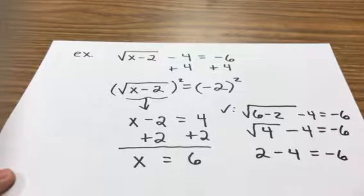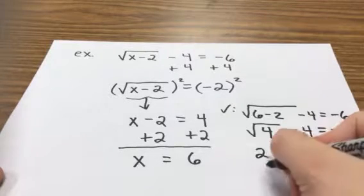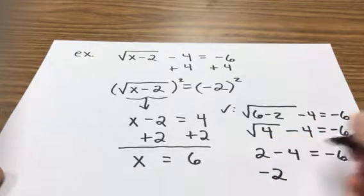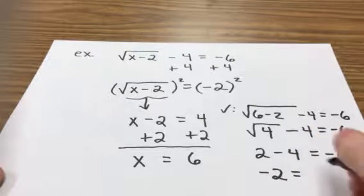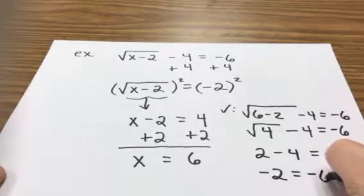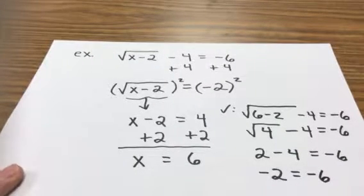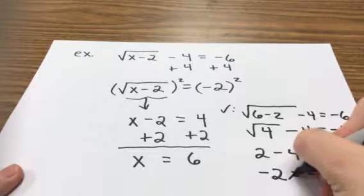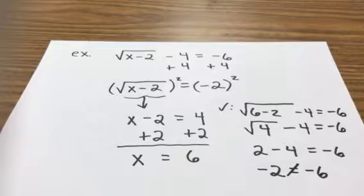And I still get 2. So what's 2 minus 4? And this is the interesting part. You're going to get negative 2. But on this side, you're still going to get negative 6. So is negative 2 equal to negative 6? Of course it's not. So I put a is not equal to symbol there. I just cross out the equal sign.